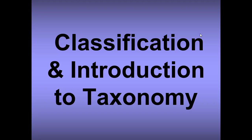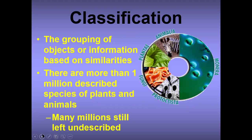Now let's get right into it. For classification and introduction to taxonomy, we need to know what classification is and what taxonomy is. Classification is the grouping of objects or information based on similarities. There are more than one million described species of plants and animals, and many millions are still left undescribed. So it's very important for scientists to classify organisms into different groups so that we can study them.